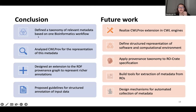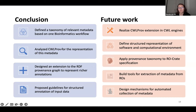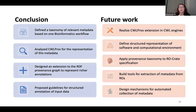In summary, I identified a set of metadata relevant from a practitioner's perspective to represent in the provenance, based on one bioinformatics workflow. I used this metadata to analyze the current version of CWL-PROV, identified strengths and weaknesses, and for the weaknesses — particularly the incomplete RDF provenance graph — I designed an extension. Because I identified a lack of clear guidelines for representing input data, I used bioschemas to represent this information. One future direction could be to apply it to the ROCrate specification as well.